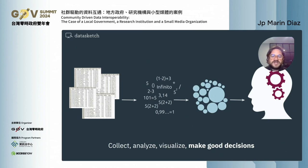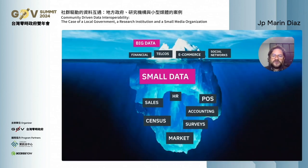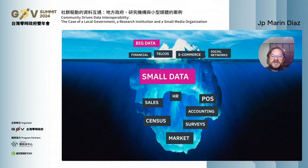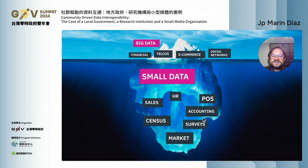It can be tricky for different users to understand how to communicate their data to impact decisions. One of the main challenges we've seen in data interoperability is that we're dealing with multiple small data sources — unlike traditional industries like financial, telecommunications, or e-commerce. In the work of NGOs, governments, and media organizations, we see interesting challenges collecting from sources like census data, accounting systems, surveys, and market indicators.